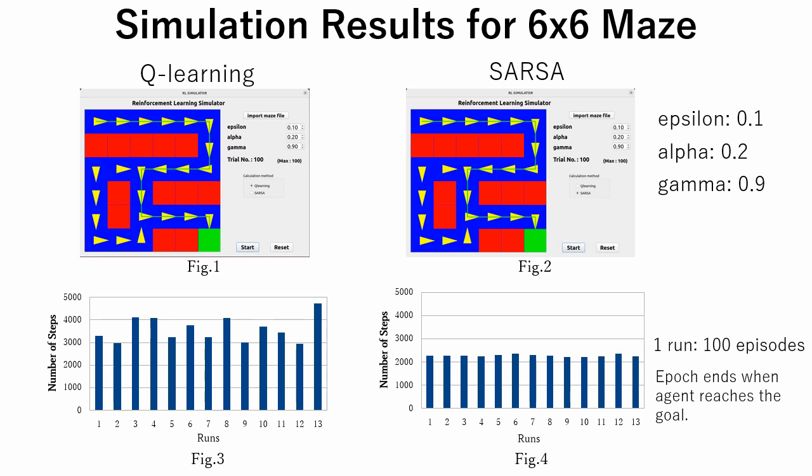For each run, number of steps is different because with epsilon equal to 0.1, 10% of steps are random and they are different for different runs.